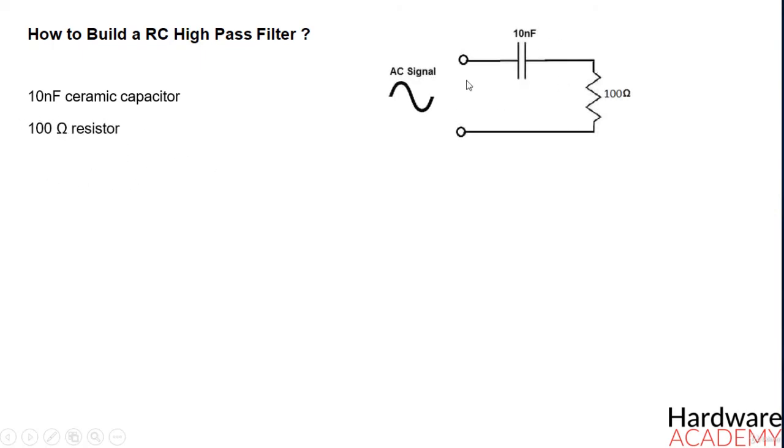So the formula to calculate the frequency of an RC circuit is this one here. And by doing the math, we get a frequency of 159 Hz.